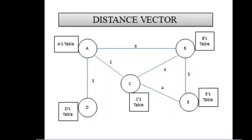This figure explains the distance vector protocol. When the routing table of a node changes, the node sends its table to its neighbor. A node updates its table with information received from its neighbor. In distance vector routing, the least-cost route between any two nodes is the route with minimum distance. For example, the least-cost route to reach node E from node A is 6, and the route passes through node C.